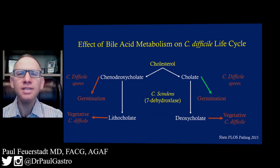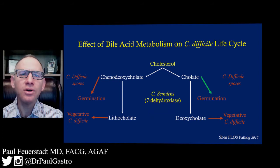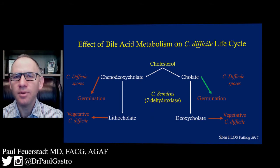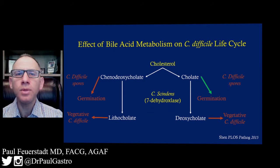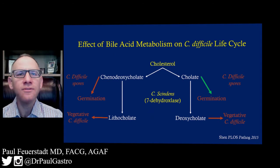In patients with C. difficile infection, there is an overabundance of cholate favoring germination, and there is less chenodeoxycholate inhibiting germination. There is also a depletion of C. scindens, and therefore less of the secondary bile salts that inhibit the vegetative phase. So the bile salt milieu plays a really important role in the development of C. difficile infection.